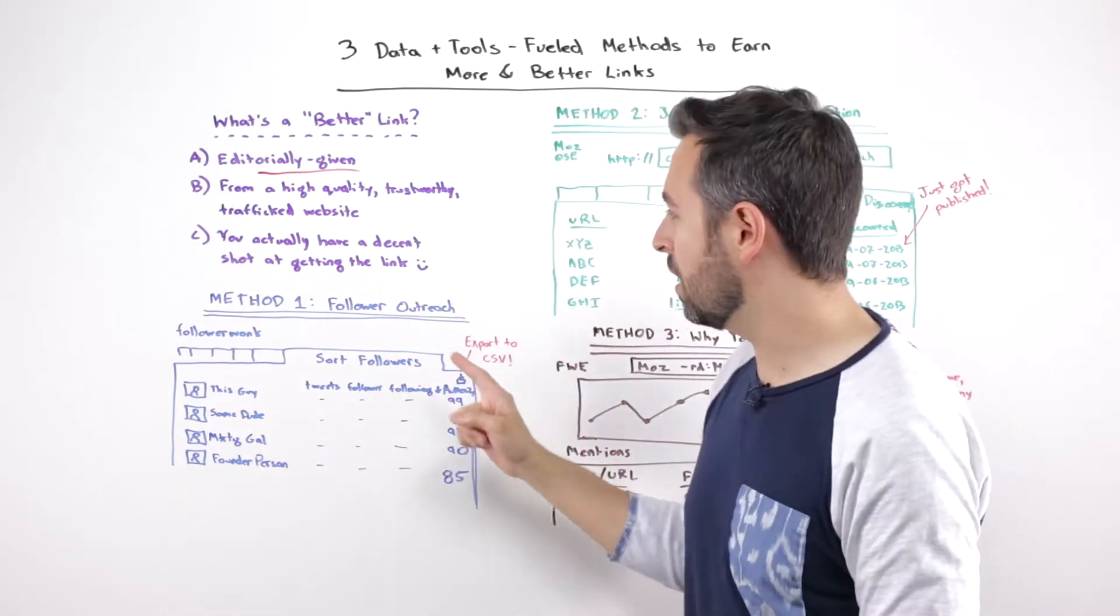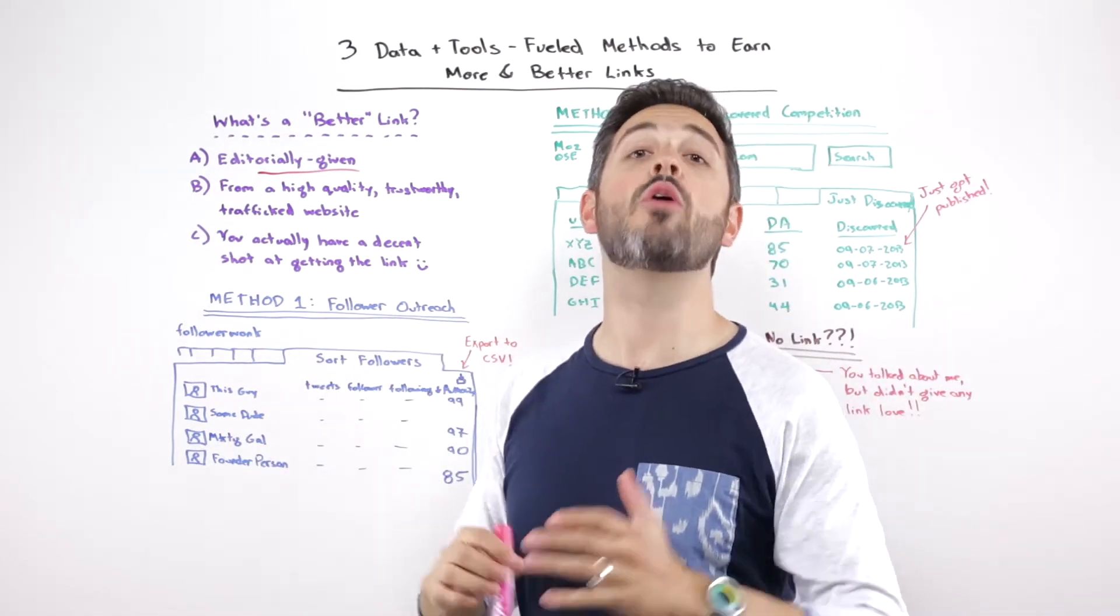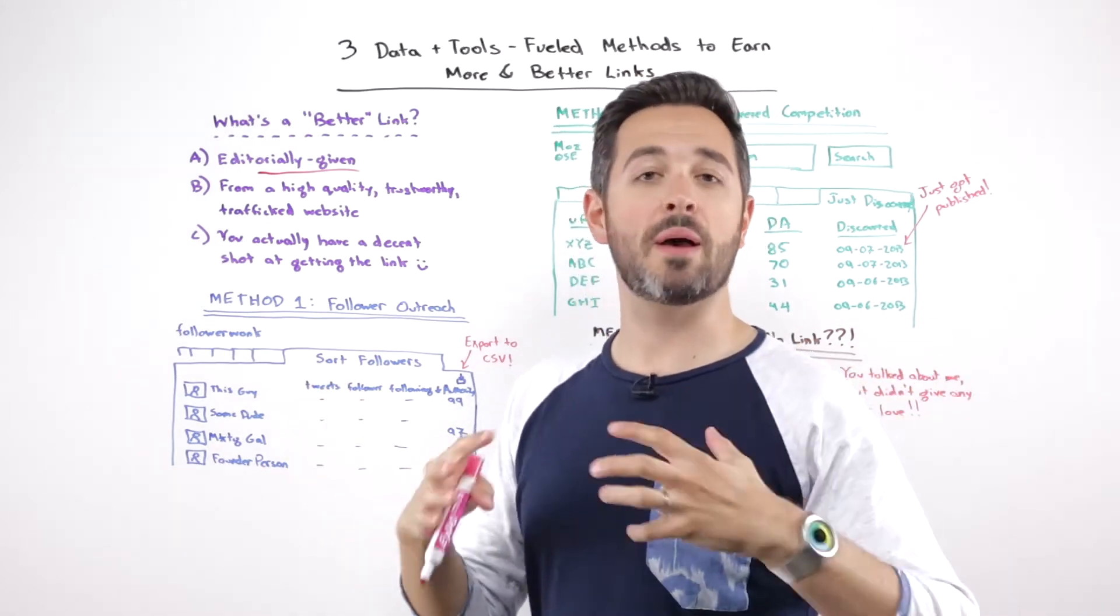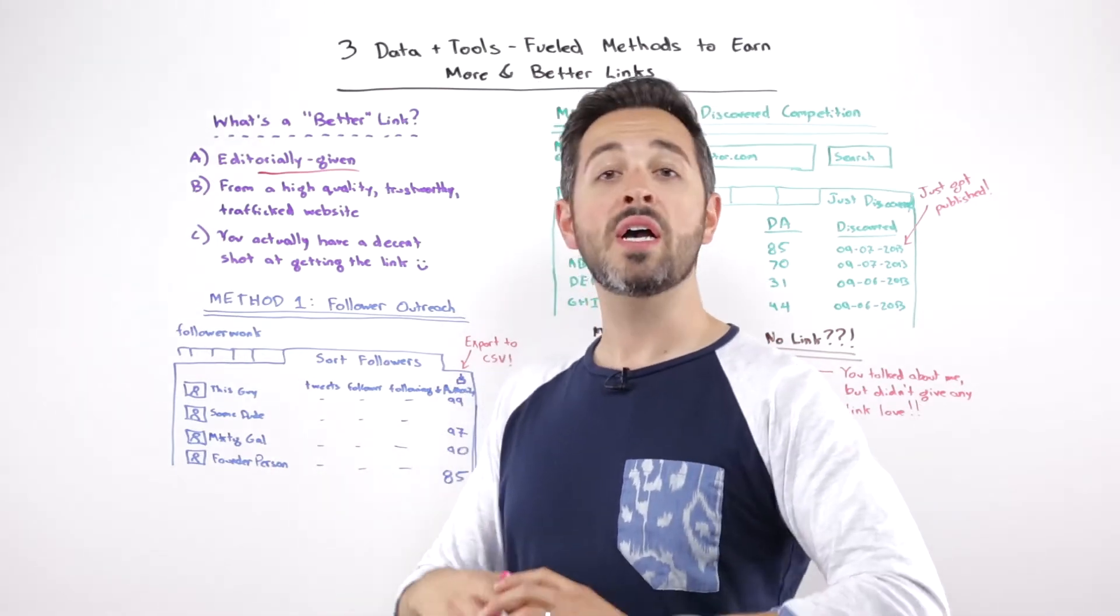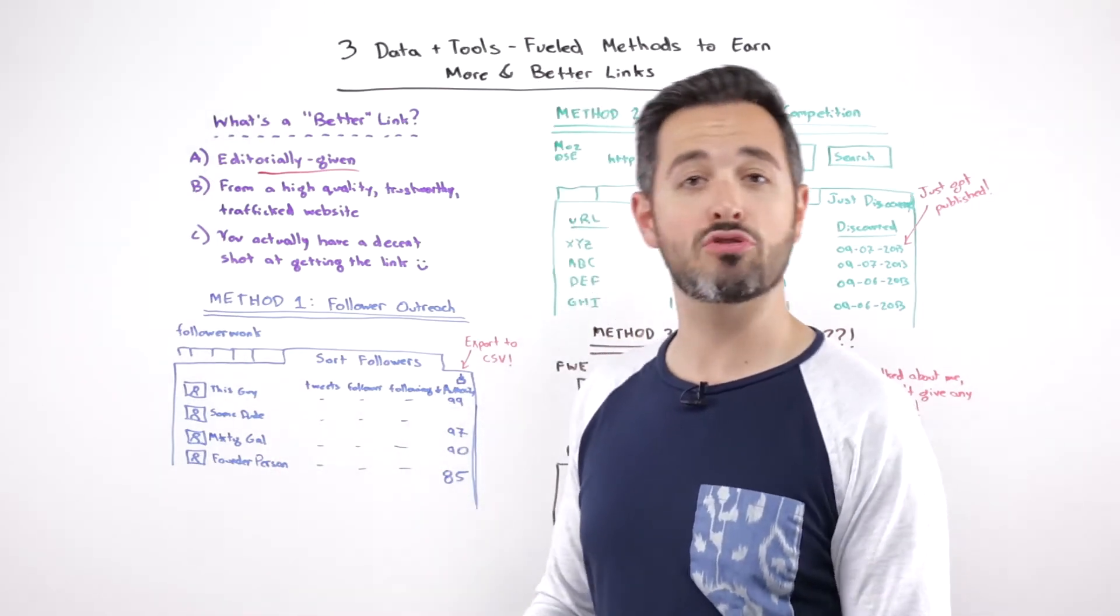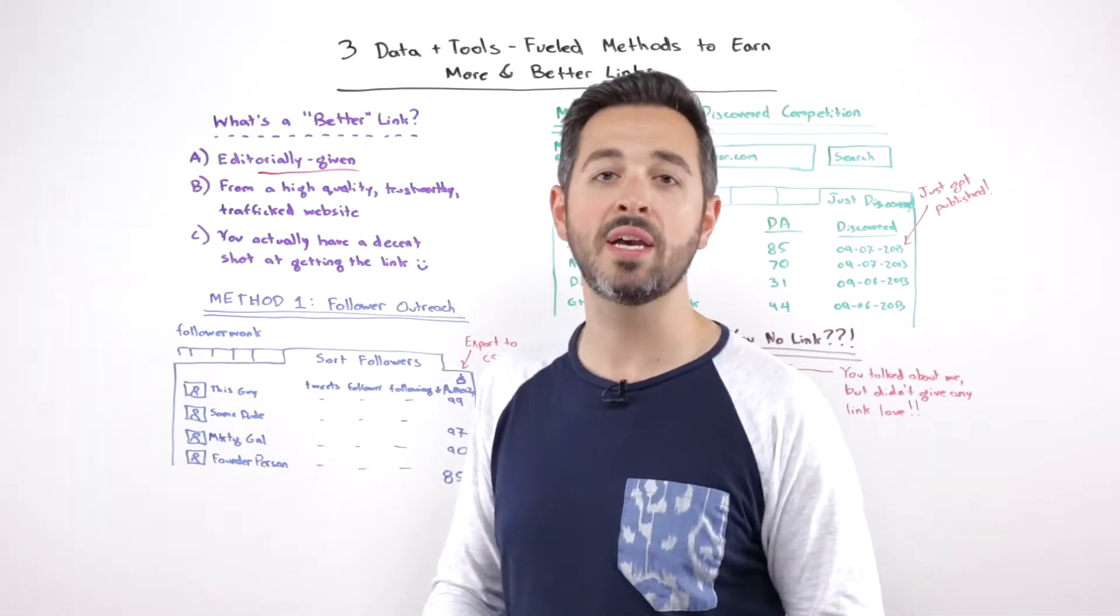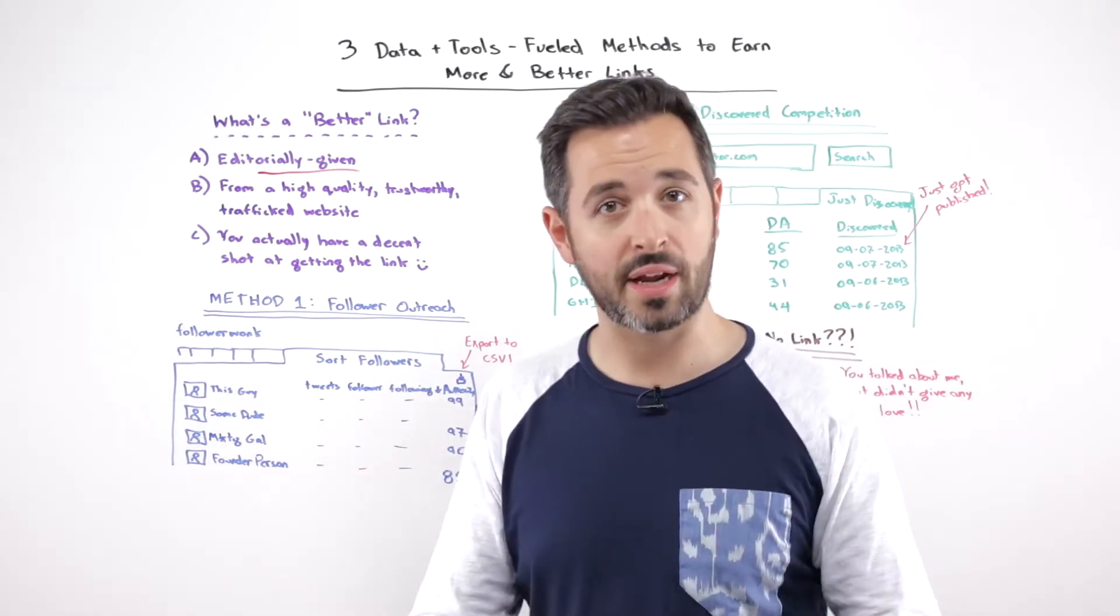So number one, method number one, follower outreach. Essentially, the practice of outreach for links. Reaching out to someone and saying, hey, we have this piece of content you might like, or we have this potential relationship we could build, or I noticed that you do some things that are interesting, and maybe we could have some overlap here. Perhaps I could contribute in some way to something that you're doing.